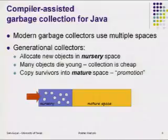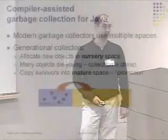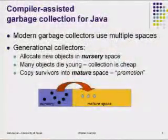Compiler-assisted garbage collection. This work was done in the context of Java. In these languages, they all require garbage collectors. Most modern garbage collectors use multiple spaces. A common configuration is a generational collector — it has a nursery space where you allocate all new objects. A lot of objects die young; this is the generational hypothesis. Collecting nursery space is cheap, and we copy survivors into the mature space through promotion.